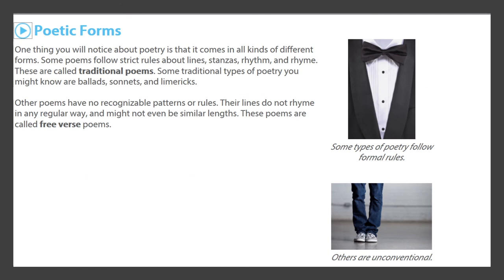One thing you will notice about poetry is that it comes in all kinds of different forms. Some poems follow strict rules about lines, stanzas, rhythm, and rhyme — these are called traditional poems. Some traditional types you might know are ballads, sonnets, and limericks. Other poems have no recognizable patterns or rules, and these are called free verse poems.